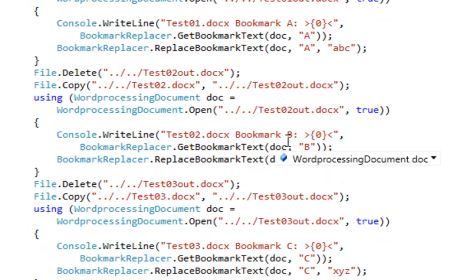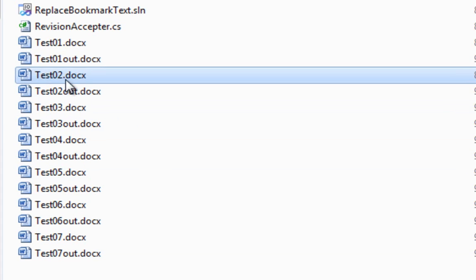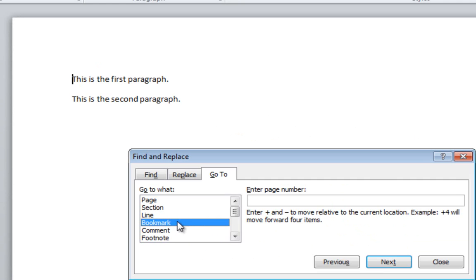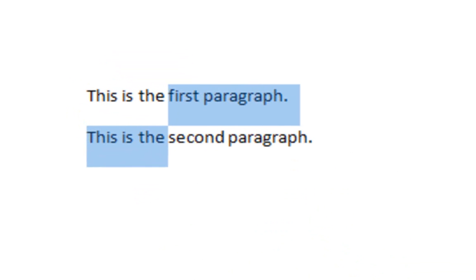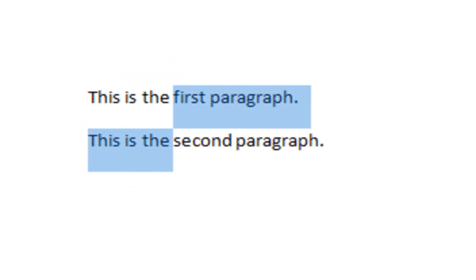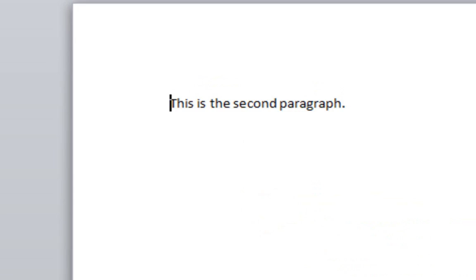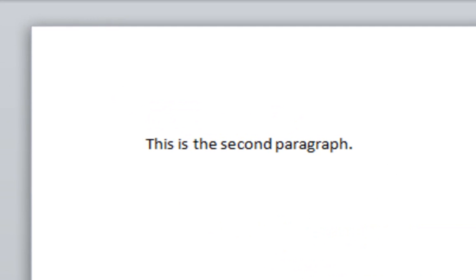The second test looks for bookmark B and replaces bookmark B with nothing. We can see that bookmark B starts in the middle of the first paragraph and ends in the middle of the second paragraph. After replacing the text of that bookmark with nothing, the text of the document will say 'this is the second paragraph' — and that's what we see.